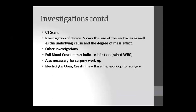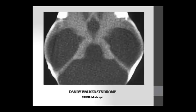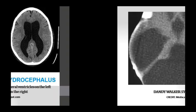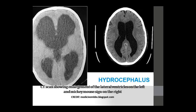Electrolytes, urea, and creatinine can be checked. Angiography can be done to assess vessels, as stretching may cause abnormalities. CT scan and MRI show tissue density and fluid pressure. Ventriculography shows ventricular dilation. On CT scan you can see Dandy-Walker syndrome, lateral ventricle dilation, and the 'Mickey Mouse sign' in hydrocephalus.